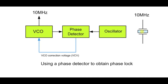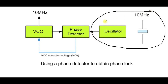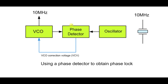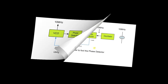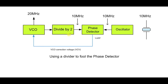So apart from phase lock, what have we achieved? Well, not much, because if we just wanted a 10 MHz signal we may as well have just made a 10 MHz crystal oscillator. This on its own has made the voltage controlled oscillator as stable as the crystal oscillator, but we're going to see how we can modify things so that the VCO can be on another frequency other than 10 MHz and still be locked to the 10 MHz crystal oscillator.